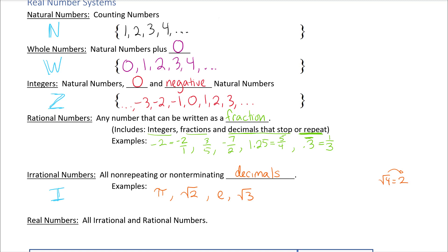Irrationals use a fancy I with two lines. Rationals use Q — not R, because both rational and real start with R, so we use Q with an extra line. The way I remember Q is by the word 'quotient,' which is a fancy name for fraction. Real numbers use R, and that symbol comes up frequently in future units.